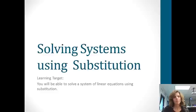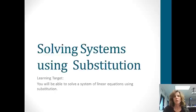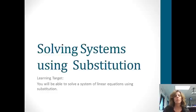We have learned so far that solving systems of equations involves finding where two lines intersect, and the only way we've learned to find where two lines intersect is by graphing. Graphing is not the only way — there are two other methods, and the one we're going to look at today is substitution. At the end of this lesson, you'll be able to solve a system of linear equations using substitution.